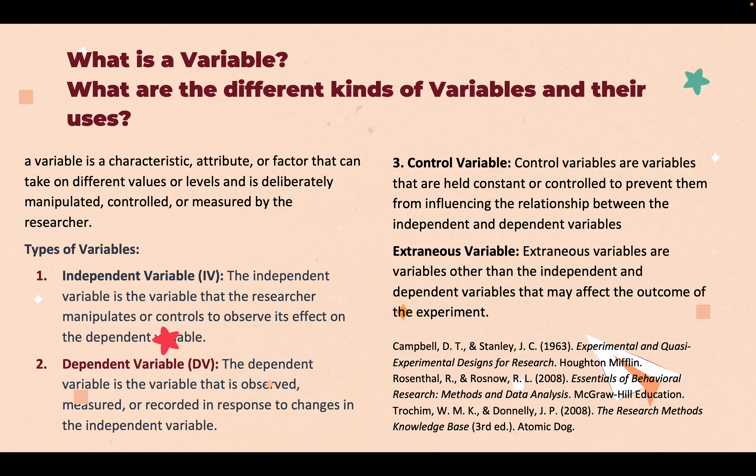The independent variable is the variable that the researcher intentionally manipulates or varies to observe its effect on the dependent variable. It is often considered as the cause or predictor variable.